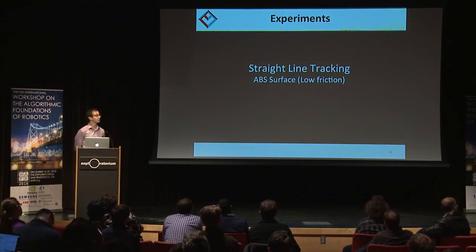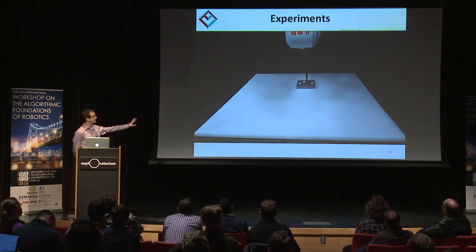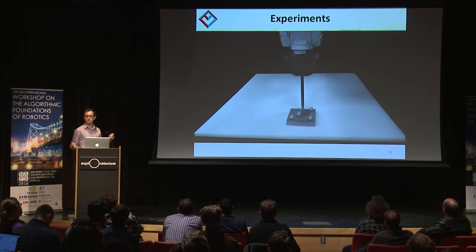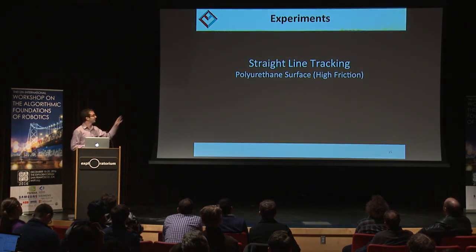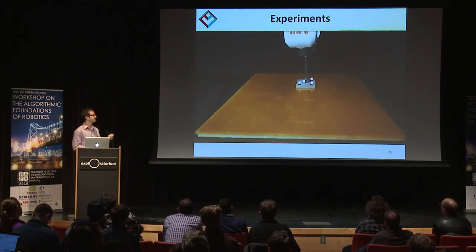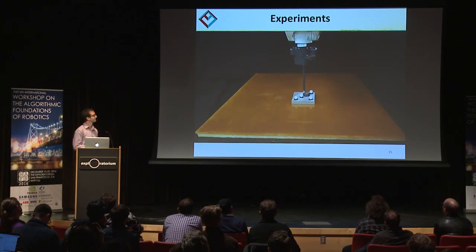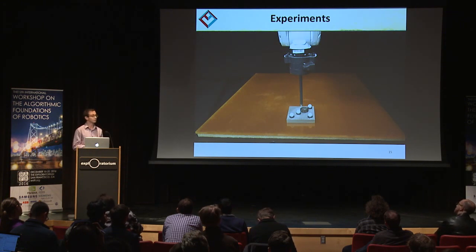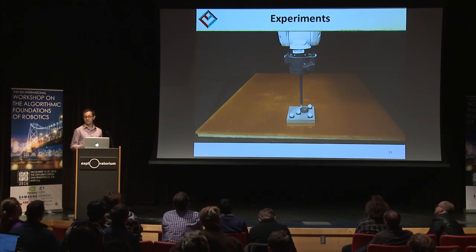What if you change the surface to something very slippery? This is ABS — it's like ice. The control parameters are not changed; they're identical. We changed the surface within 30 seconds. And finally, polyurethane, which is very sticky and has a stick-slip behavior — and again, the same controller. Through feedback, you can ensure robustness of these manipulation actions that are unstable.